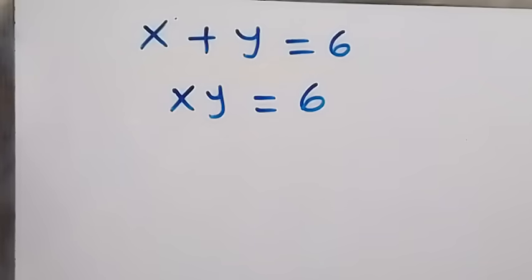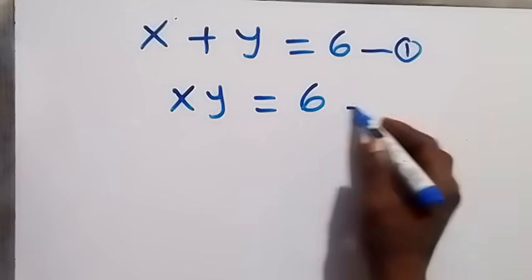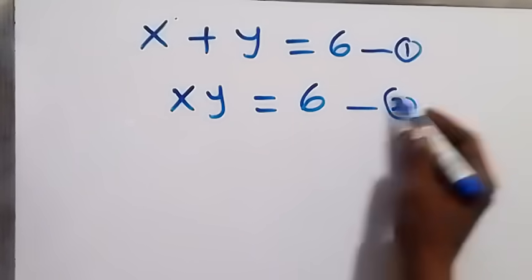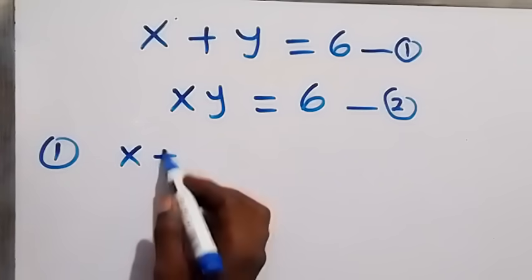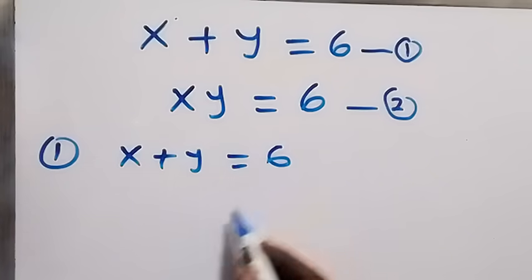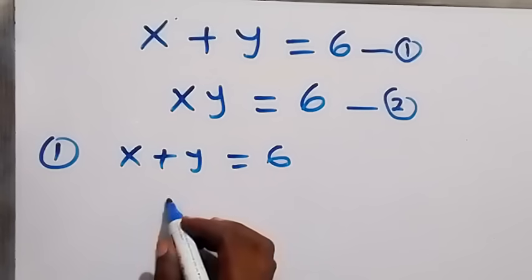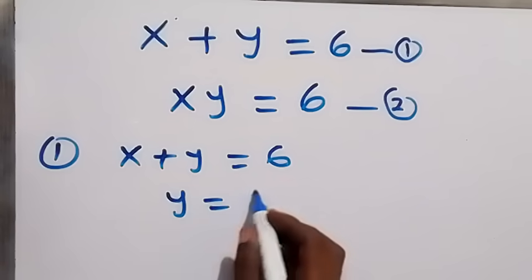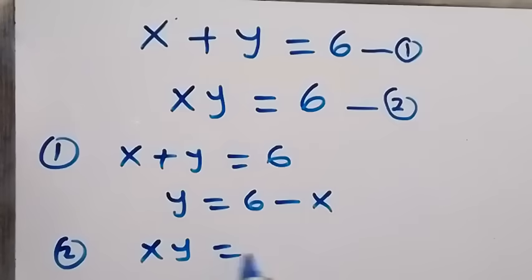Hello, you are welcome. We are solving a system of equations, finding the value of x and y. Let's label the first as equation one and the second as equation two. From equation one we have x plus y equals six. Making y the subject of the formula, we take x to the other side and get y equals six minus x.